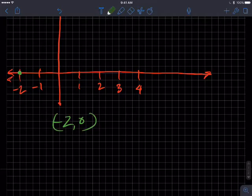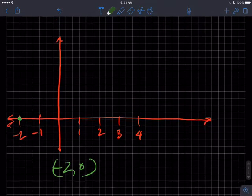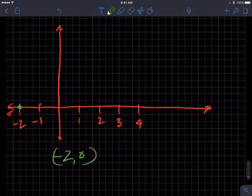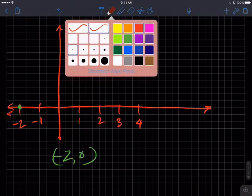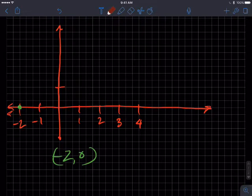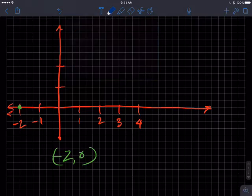And so we find that the x-intercept is one of our anchor points because it crosses the x-axis right there. And then zero, square root of 2.